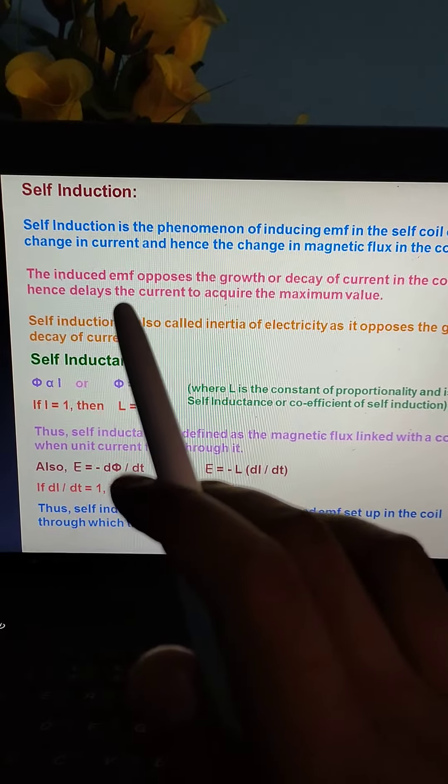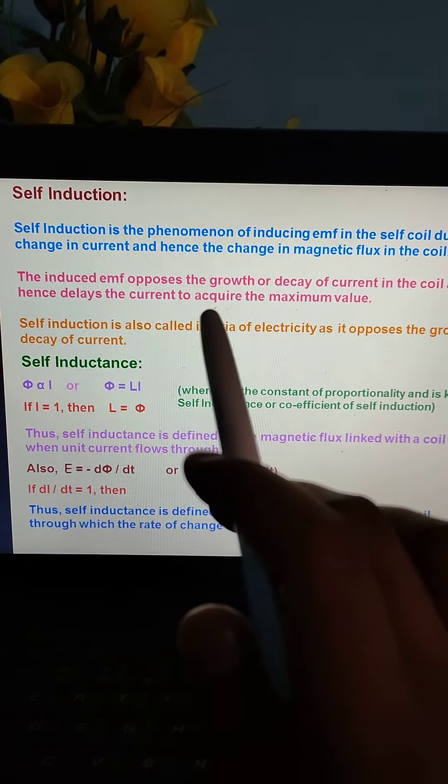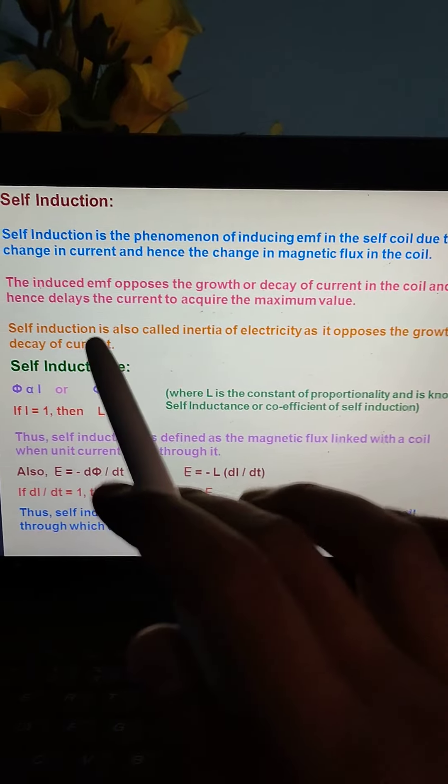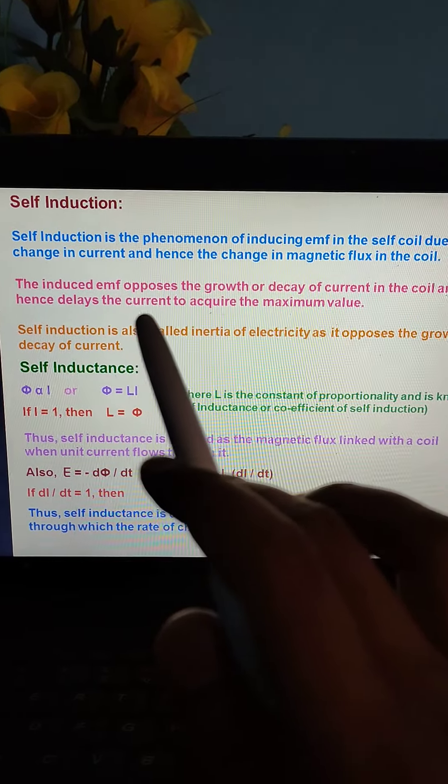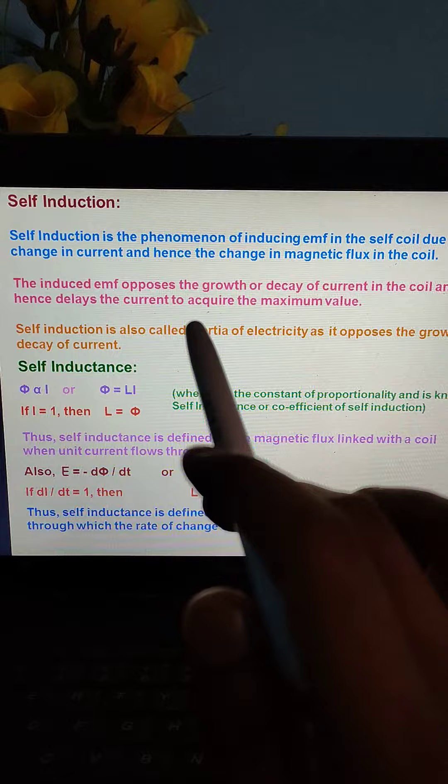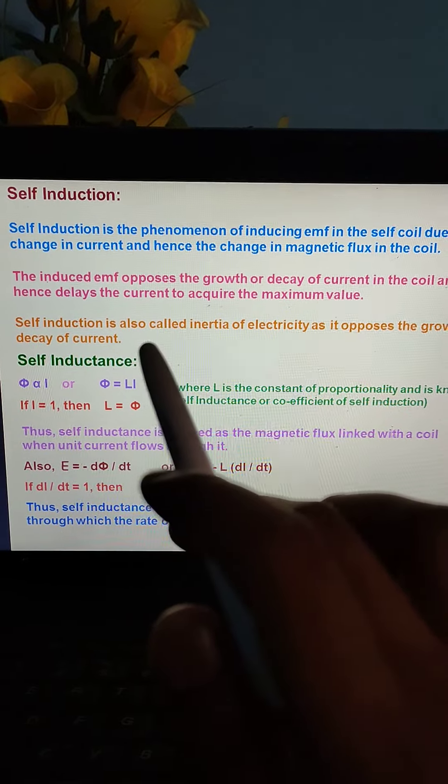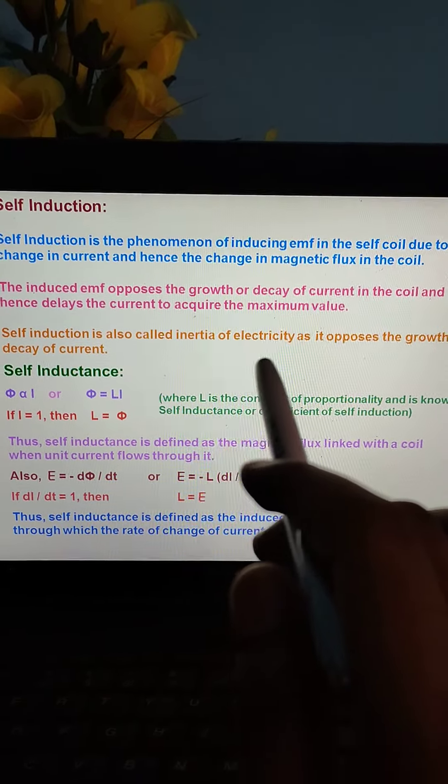The induced emf opposes the growth or decay of current in a coil and hence delays the current to acquire the maximum value. Self induction is also called inertia of electricity as it opposes the growth or decay of current.